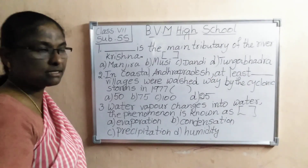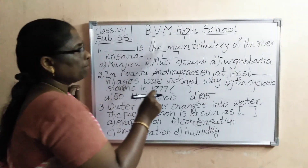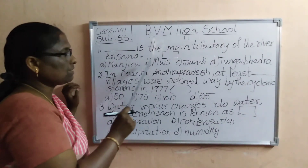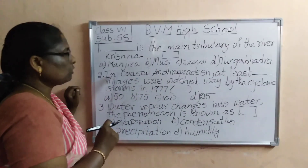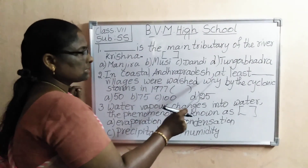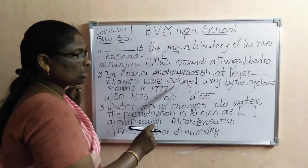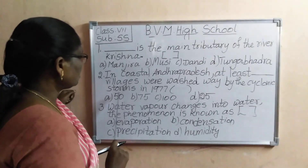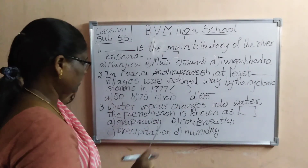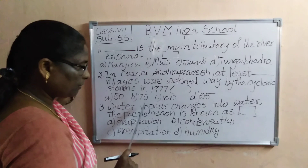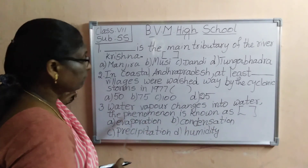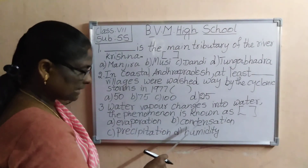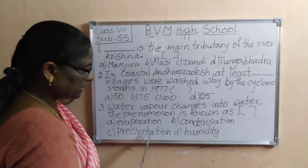Now, choose the correct answers. First one: dash is the main tributary of the river Krishna. Options are Manjira, Musi, Dandi, Tungabadra. In coastal Andhra Pradesh, at least dash villages were washed away by the cyclonic storms in 1977. Options are 50, 75, 100, 125. Third one: water vapor changes into water — the phenomenon is known as dash. Options: A. Evaporation, B. Condensation, C. Precipitation, D. Humidity.